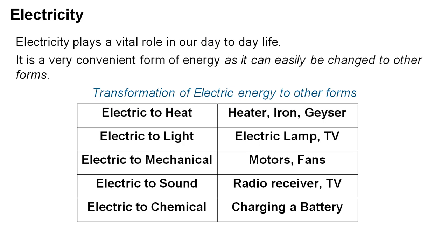As some examples: electric to heat — we make use of electric heaters, electric iron, electric geyser; all these devices transform electric energy to heat energy. Then electric to light — you have the electric lamp and television. Electric to mechanical — we make use of motors, fans, etc. Electric to sound — television and radio receiver are examples. Electric energy to chemical energy: when we charge a battery, we consume electrical energy which is transformed and stored in the battery as chemical energy for use at a later stage.